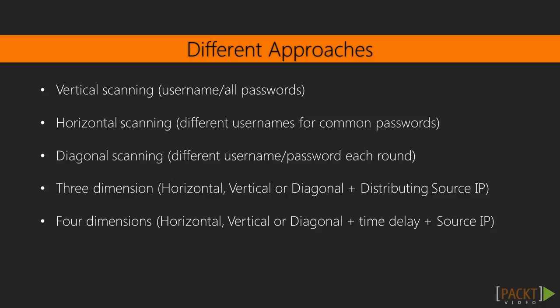Horizontal scanning is usually done in order to prevent account locking after many invalid login attempts. The next approach is called diagonal scanning, which mixes a different username and password each time, reducing the possibility of being detected or blocked. But sometimes that is not enough and we need to go further to prevent detection — this is when three-dimensional scanning comes into play.